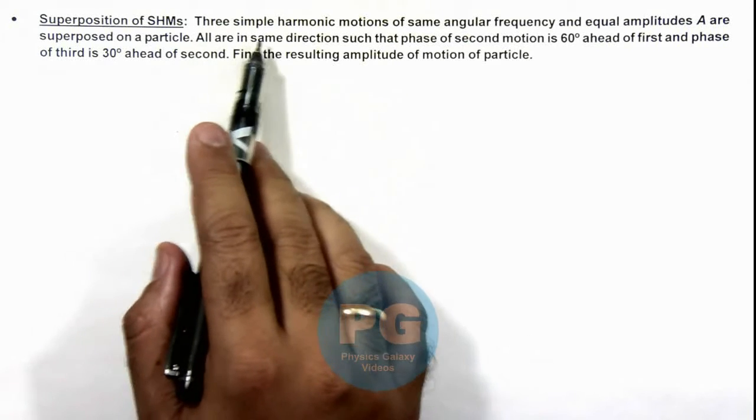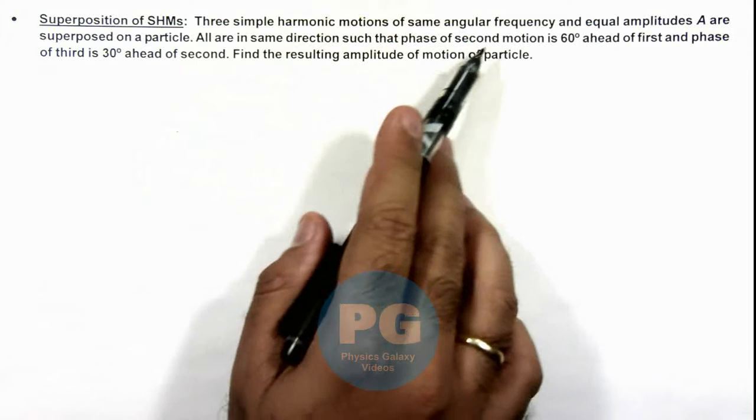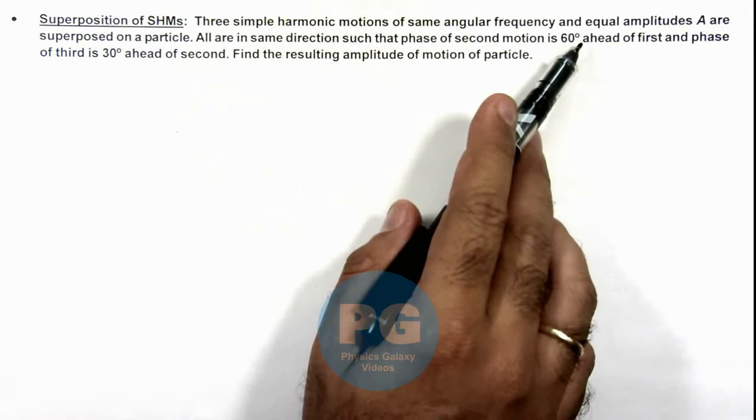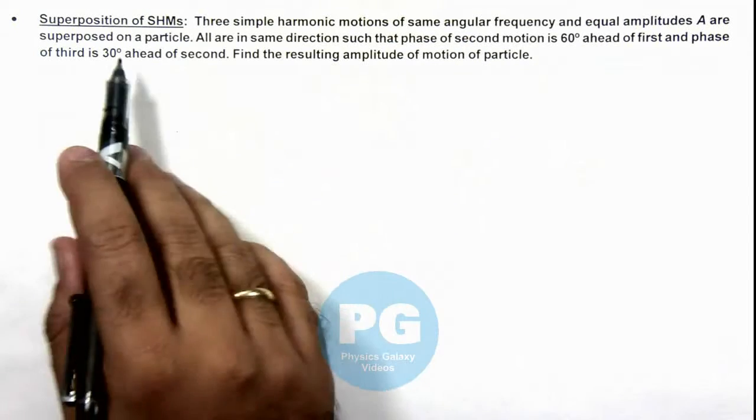It says three simple harmonic motions of same angular frequency and equal amplitude A are superposed on a particle.